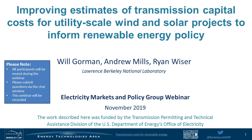Will Gorman is the person who's going to be presenting today. He led this work and has been working with us here at Lawrence Berkeley National Lab for over a year. He's currently a PhD student at UC Berkeley in the Energy and Resources Group. He has a Bachelor of Science in Chemical Engineering from UT Austin and worked for three years as a Senior Research Analyst at the Brattle Group, where he focused on issues around renewables and wholesale electricity markets. This work was also supported by Exeter Associates, where we worked with Rebecca Wittes and Kevin Porter, and it was funded by the Department of Energy.